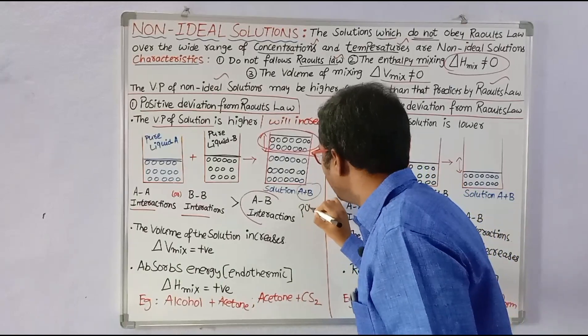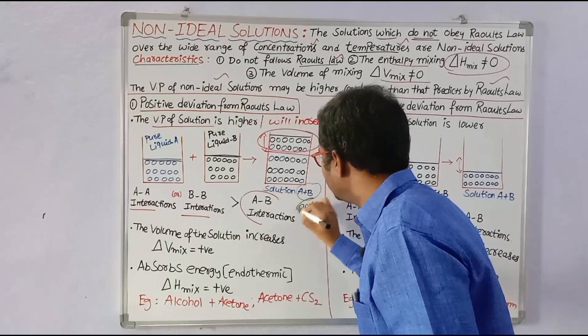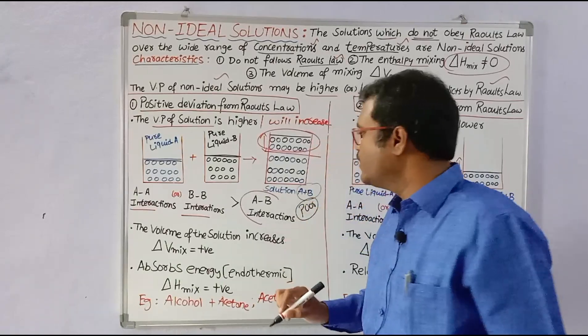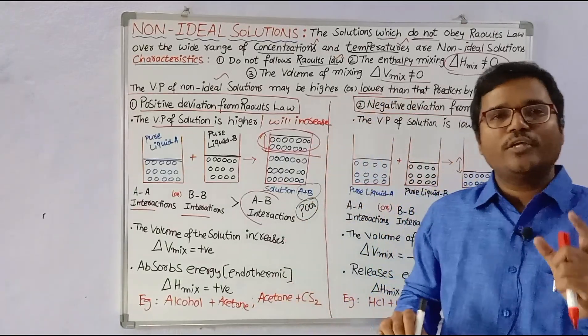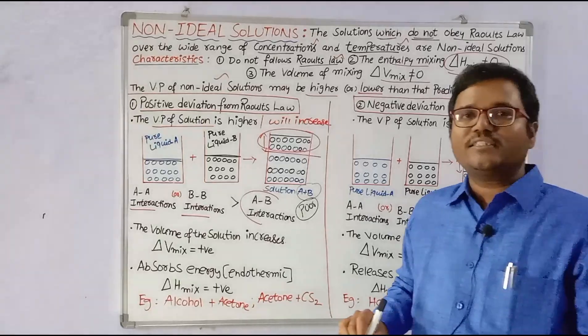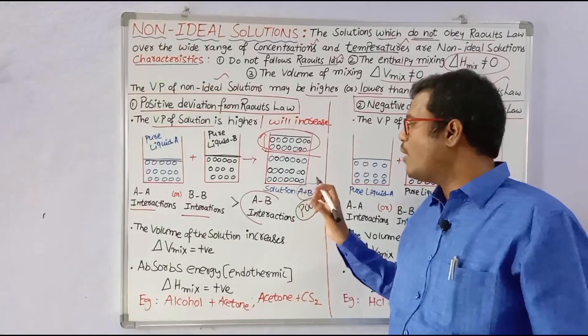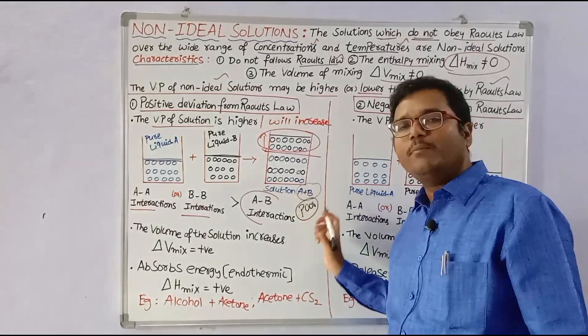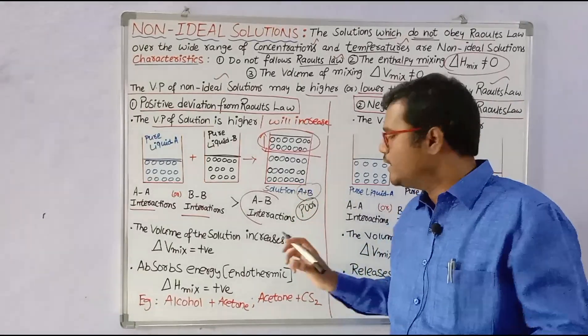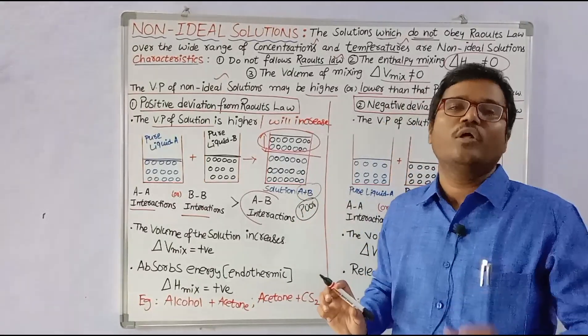In positive deviation, the intermolecular attractions between component A and B in the solution are very poor — there are less interactions.